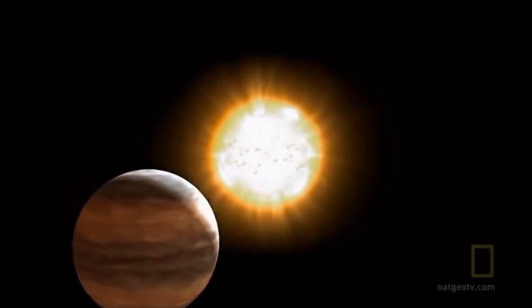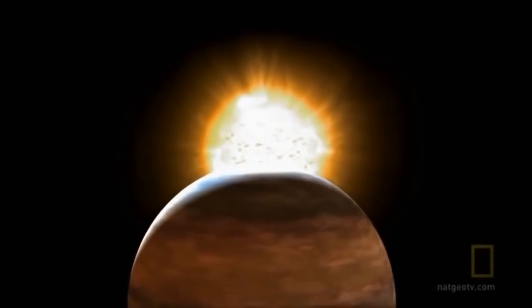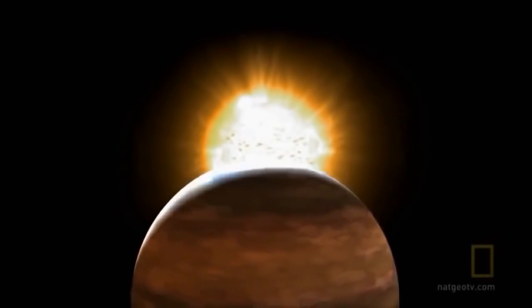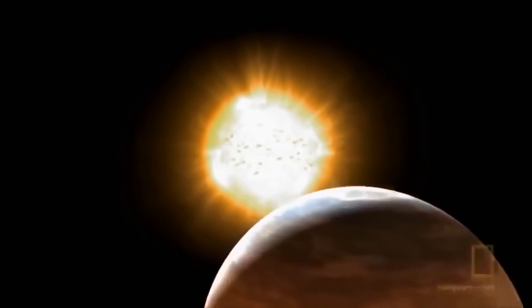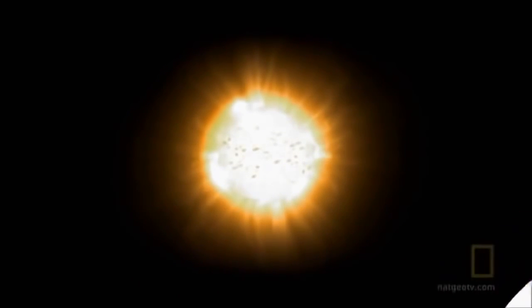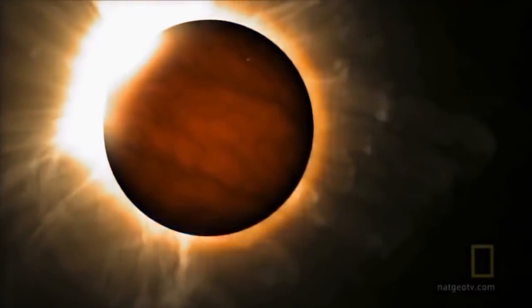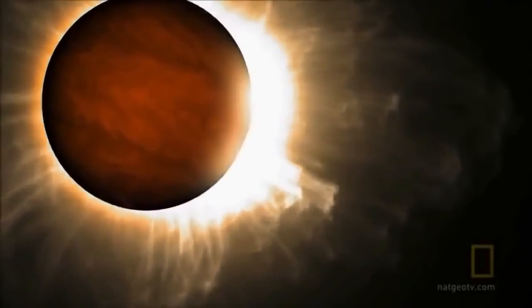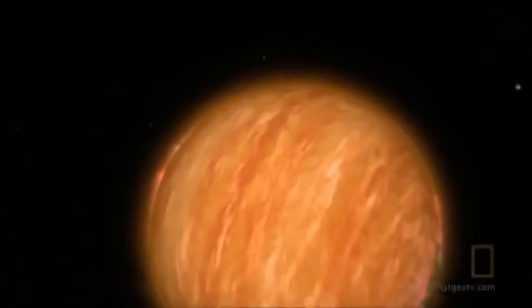Hot Jupiters are tidally locked. They present the same face to the star at all times, just like the Moon does to Earth. It's going to be permanent daylight on one side and permanent nighttime on the back. If I were stuck on a hot Jupiter, I'd want to be on the backside and hope that some of the heat from the front side facing the star would make its way around the back.